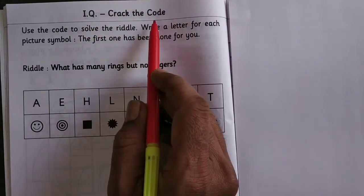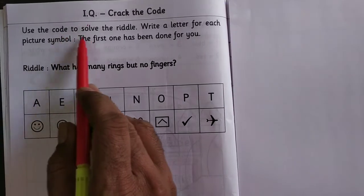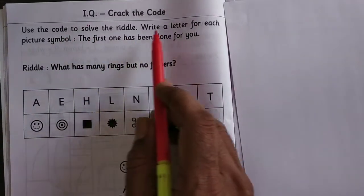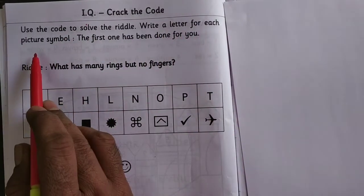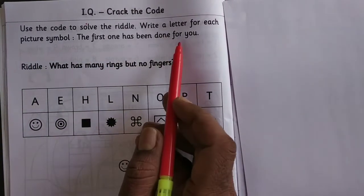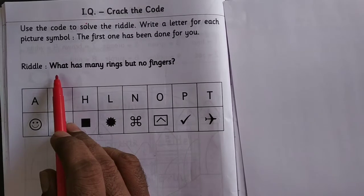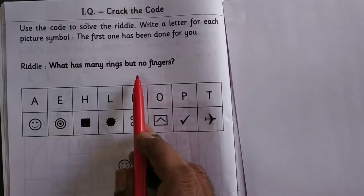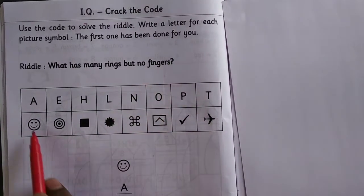IQ crack the code. Use the code to solve the riddle. Write a letter for each picture symbol. The first one has been done for you. The riddle is: What has many rings but no fingers?